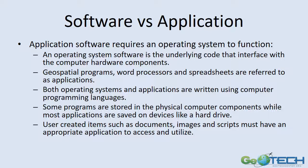We need to understand that there's a difference between software, operating systems, and applications. When we think of a computer, it must have some overarching program behind it to make it function. In the geospatial realm, when we talk about Esri products, we generally are talking about something like Windows as the operating system. An application is something like a geospatial program, a word processor, a publishing tool, or an image editor. We're looking at using a scripting language or a programming language inside of an application.